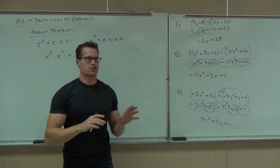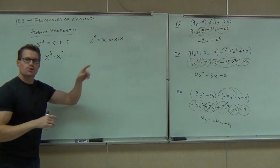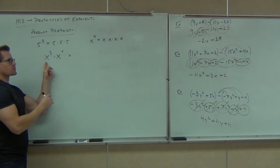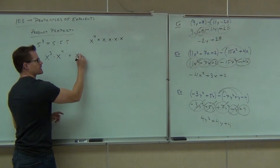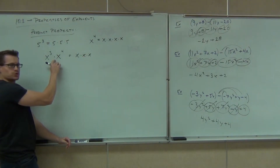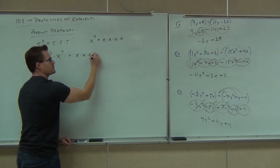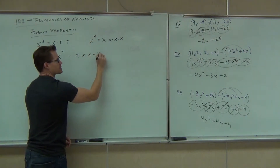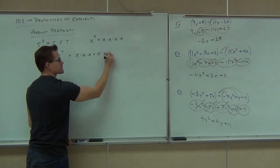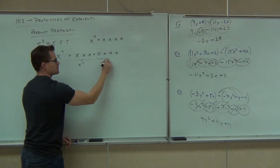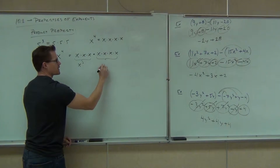And here's what it comes down to. If we understand this concept, look what it does for us. x to the 3rd really means x times x times x. And this is another multiply, so x to the 4th is x times x times x times x. That's our x to the 3rd and that's our x to the 4th.